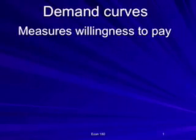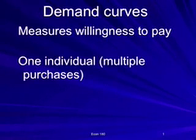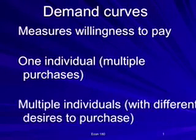The demand curve represents the consumption side of this particular market. You can think of it as either being one individual's willingness to buy multiple units of the product, or different individuals' willingness to pay for one unit of the product. The consumer can either be final consumers or industrial consumers of the product.